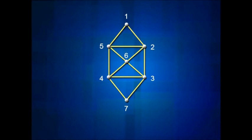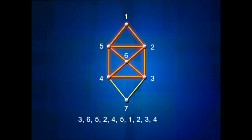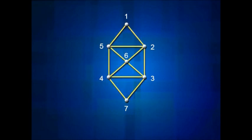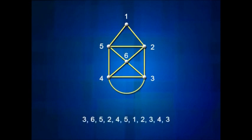We can draw the graph as a closed trail: start at 3, do the same thing as before, end at 4, then take the two new edges from 4 to 7 and 7 to 3. Or we could modify the graph by just adding an edge from 3 to 4 — we'd no longer have a graph technically, we'd have a multigraph, but we'd still be able to draw it as a closed trail.